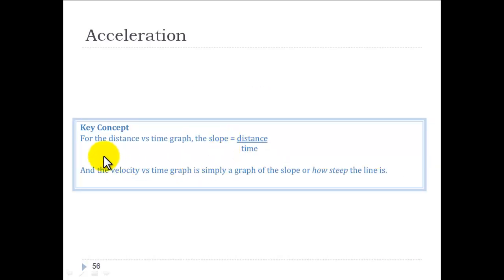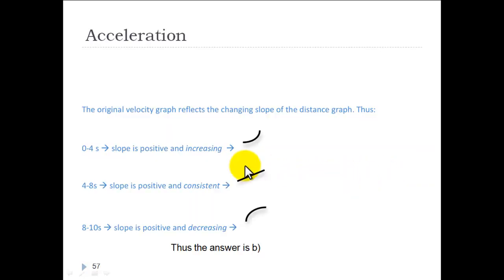After going through all of that, the slope here equals the distance over time. And the velocity versus time graph is simply a graph of the slope or how steep the line is. From 0 to 4 seconds, the slope is positive and increasing. This is your distance graph. And you can see that the slope here is positive. It's always positive and it's getting steeper. This is the distance graph that would come from your 0 to 4 seconds straight line.